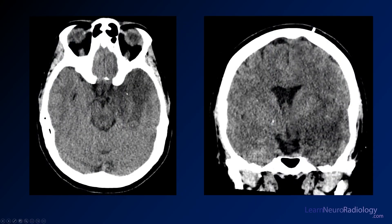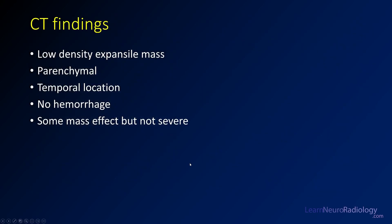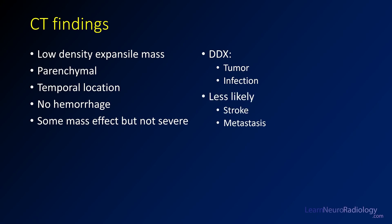Here are some additional stills from that CT. You see a low-density lesion in the medial aspect of the temporal lobe, involving the basal ganglia and temporal stem. It's a low-density mass in the parenchyma of the temporal lobe and insula. There's not really any hemorrhage, some mass effect but it's not severe. In the emergent setting, your differential should be tumor or infection. Stroke is less likely as it doesn't follow a vascular distribution. Metastatic disease is possible but it's solitary with no other masses seen.